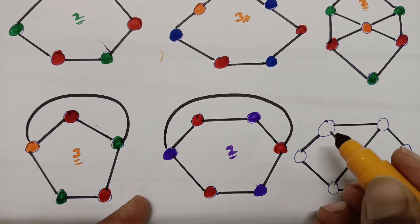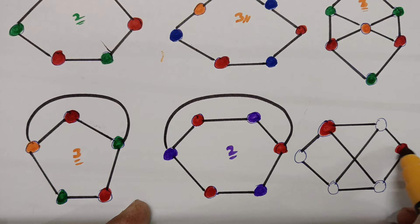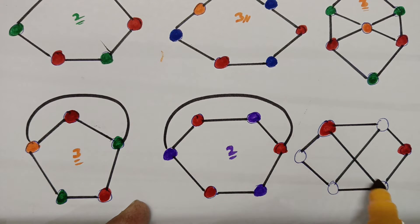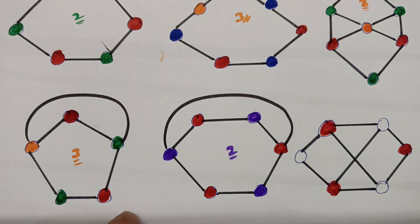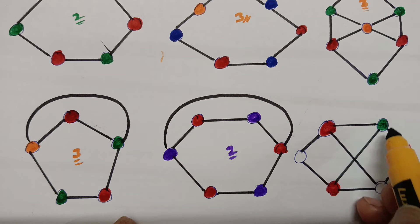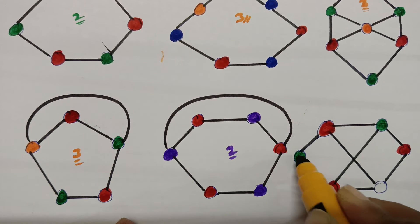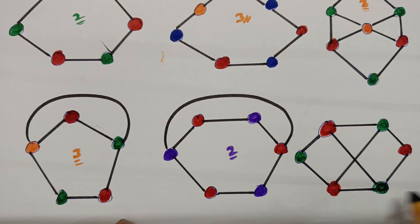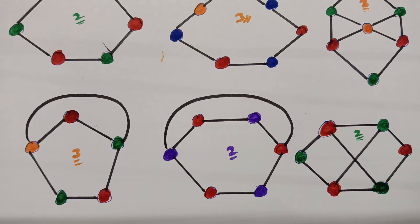Starting with red again — I avoid red on adjacent vertices and reuse it on non-adjacent ones. I then add green, applying it to the remaining compatible vertices. These three groups are non-adjacent among themselves, so the chromatic number for this graph is two.